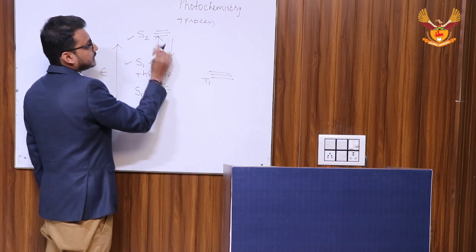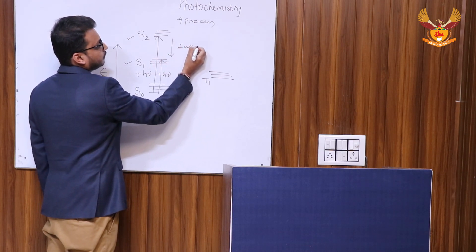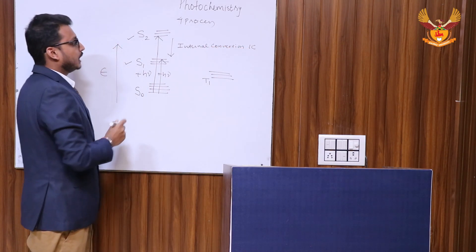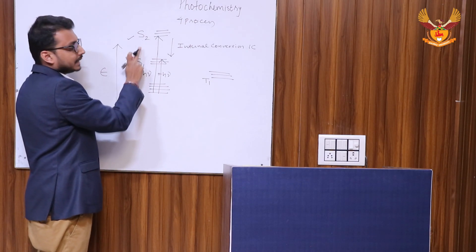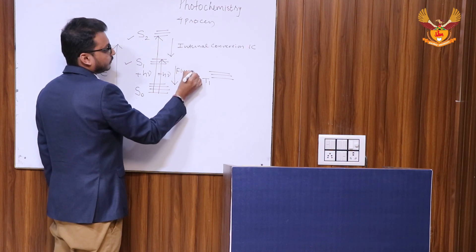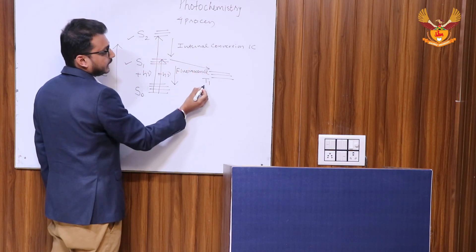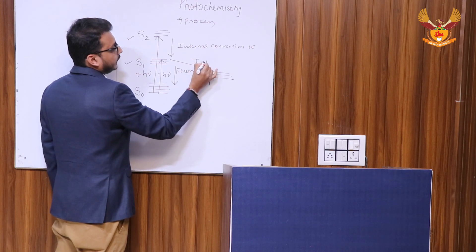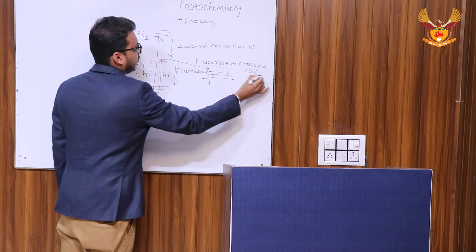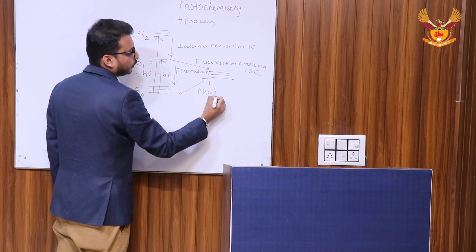The first process — energy moving from S₂ down to S₁ — is called internal conversion, denoted as IC. The second process, where the excited singlet state is converted into the ground state with emission of light, is fluorescence. The third process, where the molecule in the S₁ state transitions to the T₁ state, is called inter-system crossing, denoted ISC. The fourth process, the molecule returning from T₁ to S₀, is called phosphorescence.